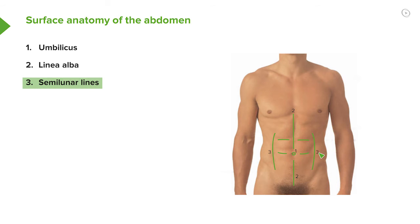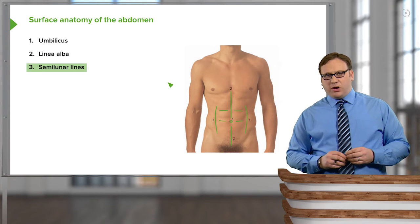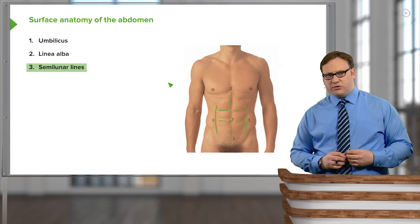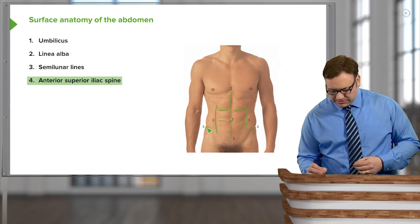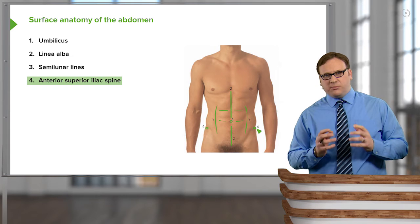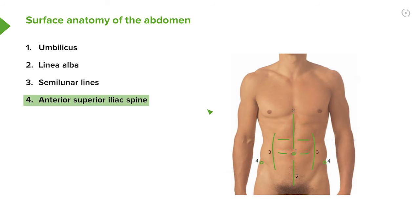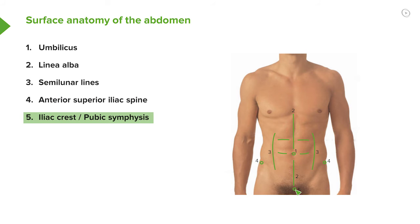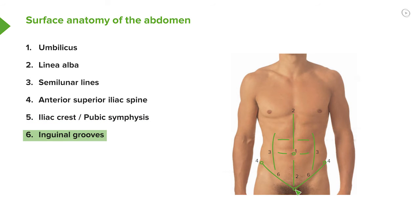These lines are known as our semi-lunar lines. So we have the linea alba in the midline, the umbilicus, and then lateral to it a pair of semi-lunar lines. We can also see a few bony landmarks — a structure on either side of the body known as the anterior superior iliac spine, approximately here and here. These are the structures which your trousers are supposed to sit on. From the anterior superior iliac spine, we have in the midline the iliac crest and the pubic symphysis. Running down, we see a slight depression indicating the inguinal ligament — our inguinal groove.